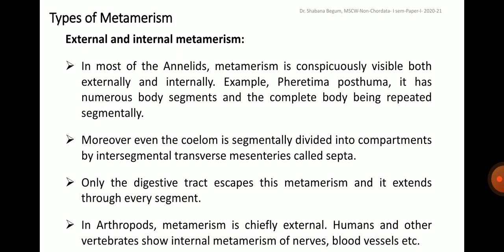Now let us discuss about the types of metamerism. Metamerism can be external and internal. In most of the annelids, metamerism is conspicuously visible both externally and internally. For example, the earthworm, that is Pheretima posthuma, which has numerous body segments and the complete body being repeated segmentally. Moreover, even the coelom is segmentally divided into compartments by intersegmental transverse mesenteries called septa.